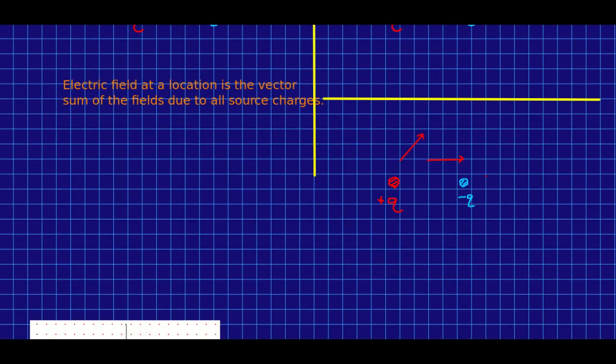Similarly, if we look at, say, this point, there would be a field due to the positive charge, which points straight away from the positive charge, but would be very weak here, and a field due to the negative charge, which points straight in towards the negative charge. And so the total would be something like this.